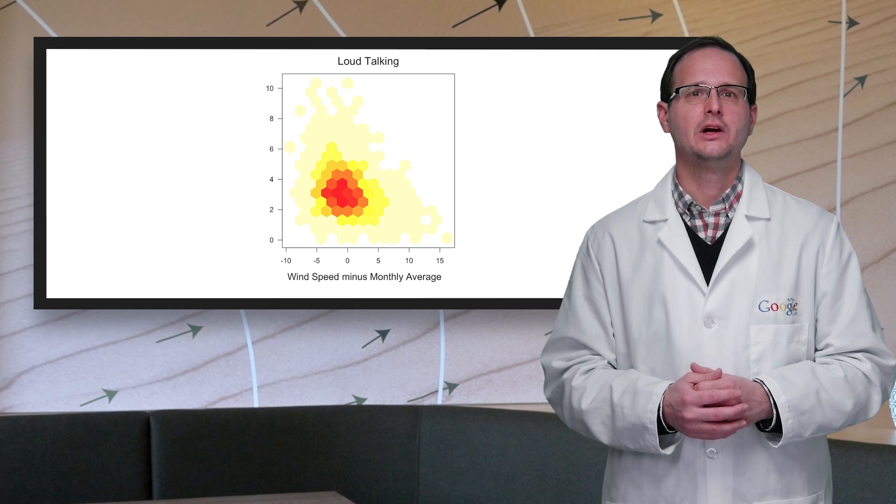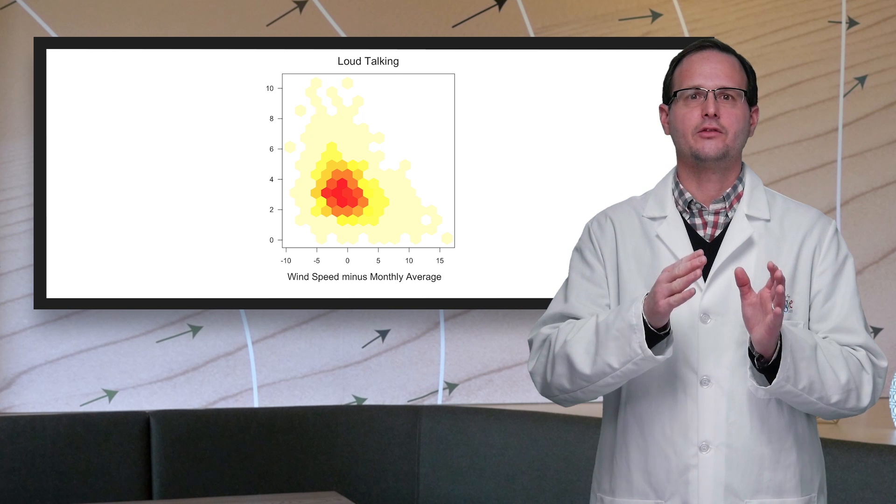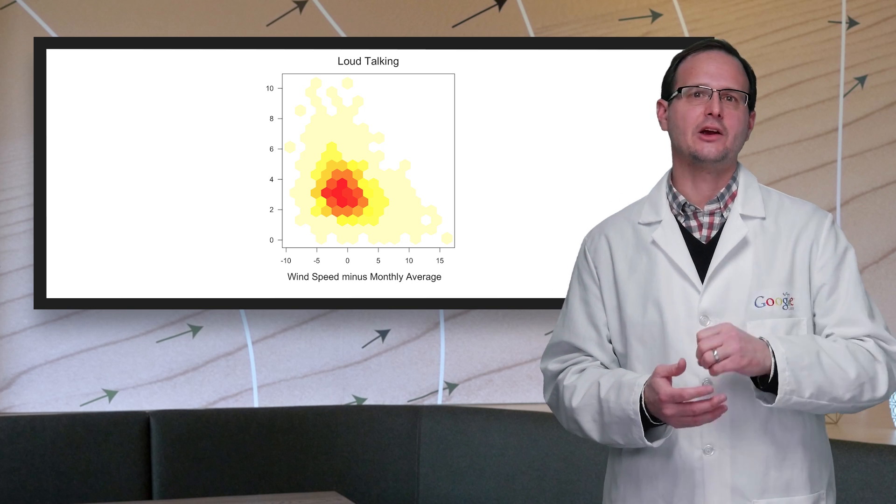Particularly for loud talking, which almost gives us a diagonal line for both the overall distribution and the area of highest concentration.